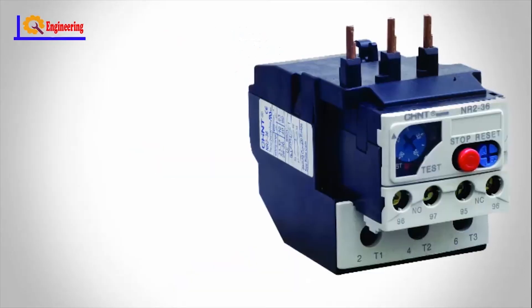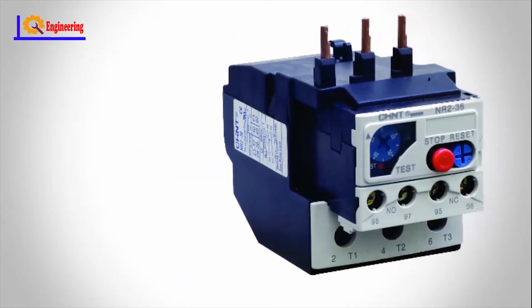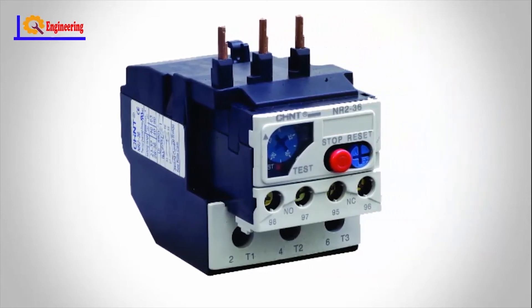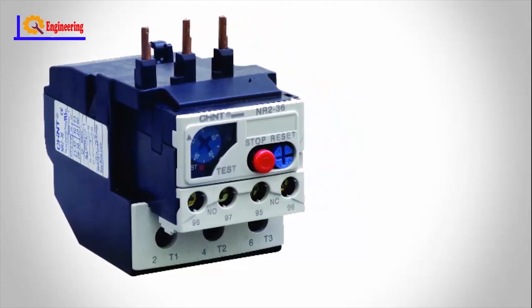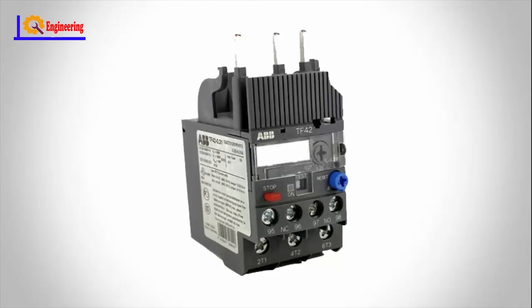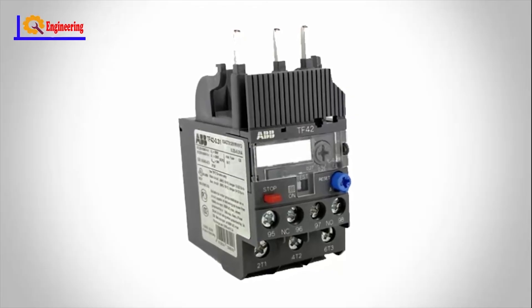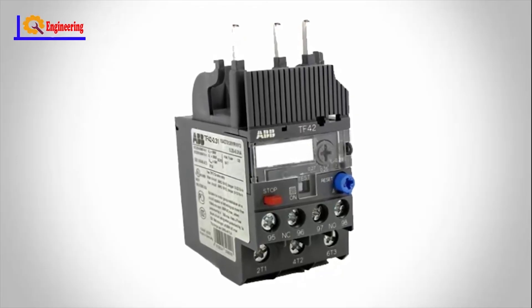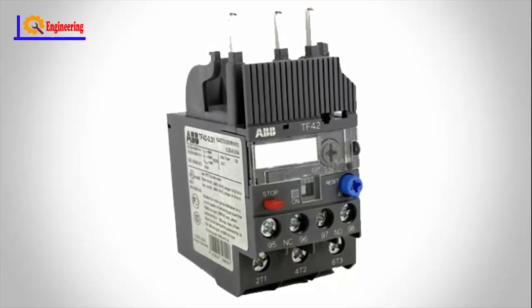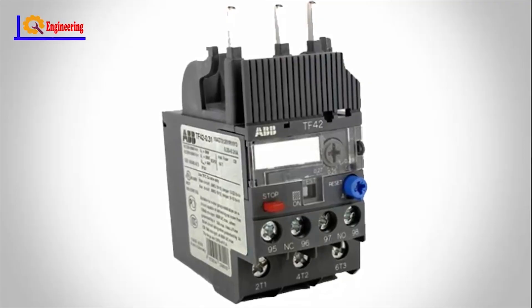Thermal relays: these relays are based on the effects of heat, which means the rise in the ambient temperature from the limit directs the contacts to switch from one position to another. These are mainly used in motor protection and consist of bimetallic elements like temperature sensors as well as control elements. Thermal overload relays are the best examples of these relays.